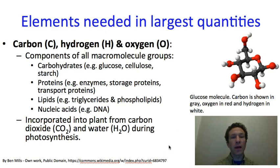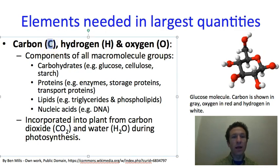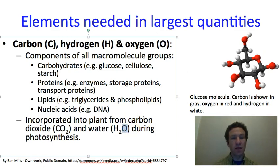Carbon comes from carbon dioxide, which the plant takes in during photosynthesis. Hydrogen comes from water, also incorporated during photosynthesis. The oxygen found in macromolecules comes from the carbon dioxide, not from the water. The oxygen in water is actually given off as the waste product of photosynthesis — that is where we get our oxygen to breathe.